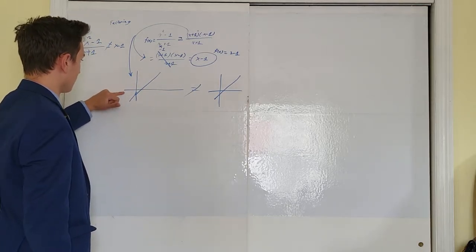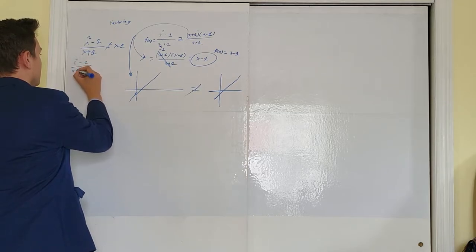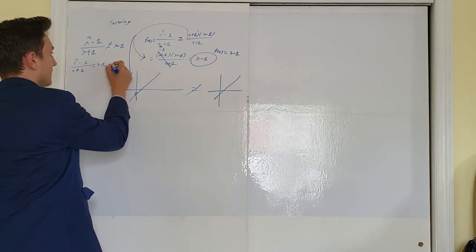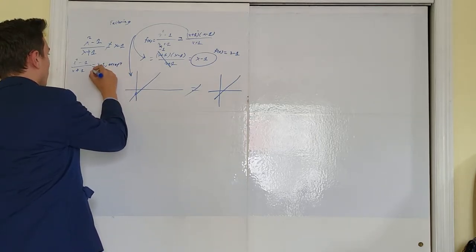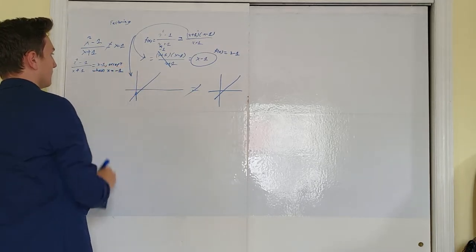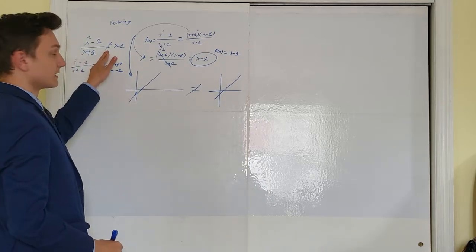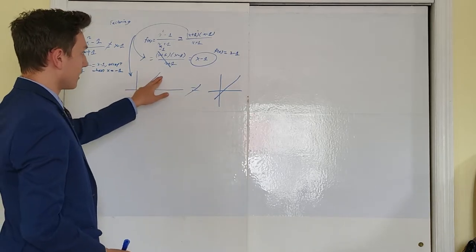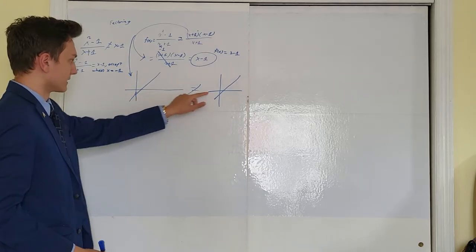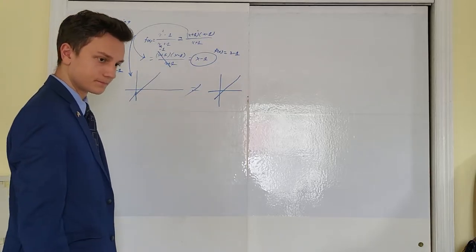Now let me go a little further with this. x squared minus 1 over x plus 1 equals x minus 1, except when x equals negative 1. All right, that is the correct way of writing it, and that is a true statement. This is false, this is true. Okay, because they are indeed the same graph, except at x equals negative 1, because that's where we see the difference. There's only one difference, and it's in that removable discontinuity.